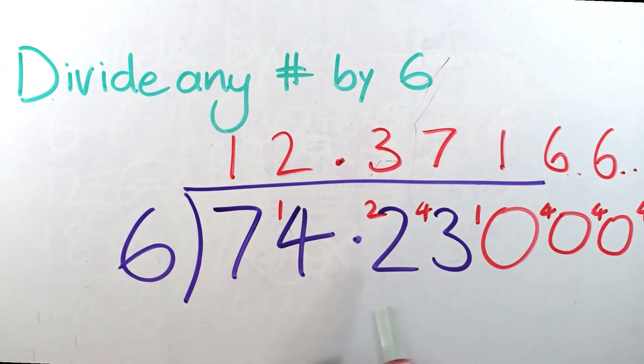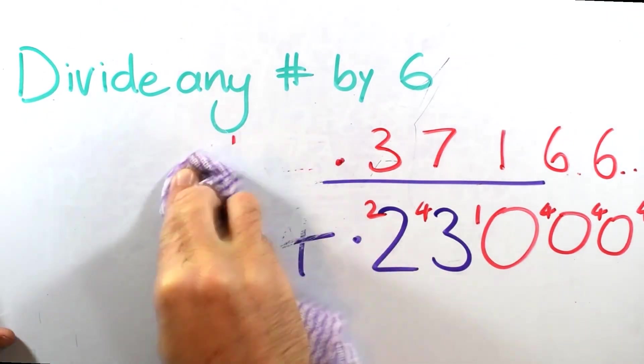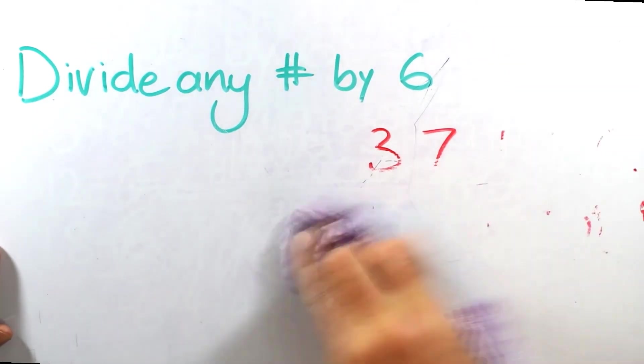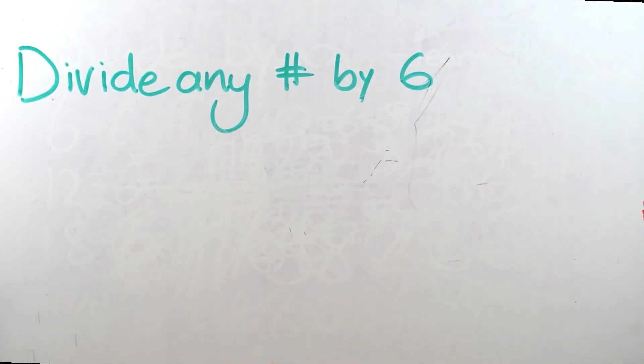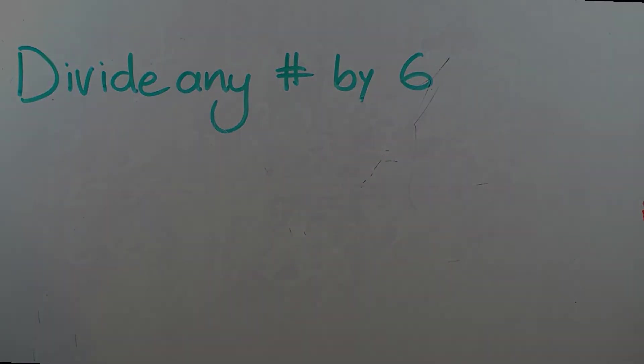So 74.23 would give you, if you chuck them into 6 segments, 12.3716666 recurring. So, that is a handy dandy method that works for any number at all and it's just lovely. And I hope you get to enjoy dividing by 6 or any other number because once you've got the method, once you've figured out how to do that algorithm, you can divide any number and it's quite liberating, it's fun. Anyway guys, I'll catch you in another video another time. Bye.